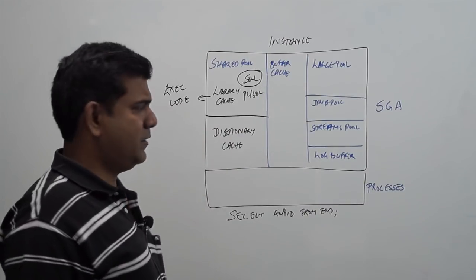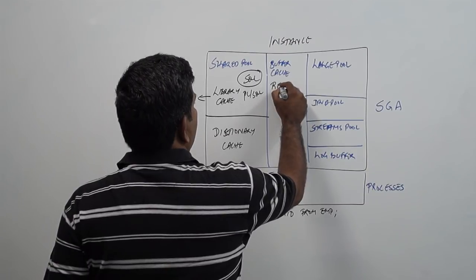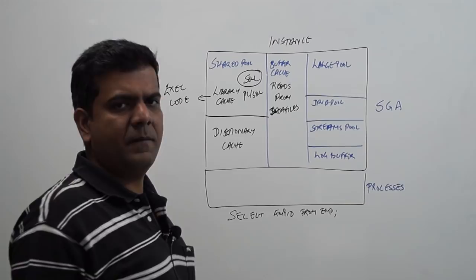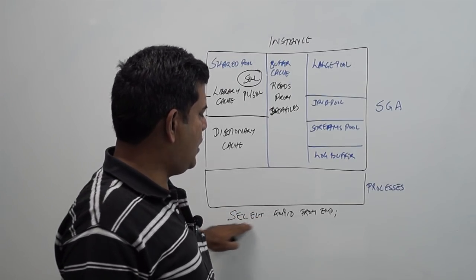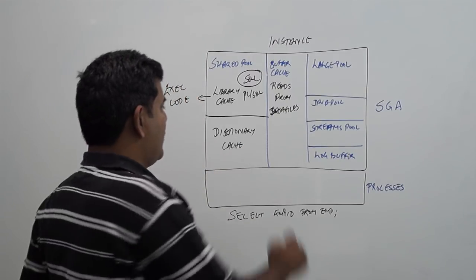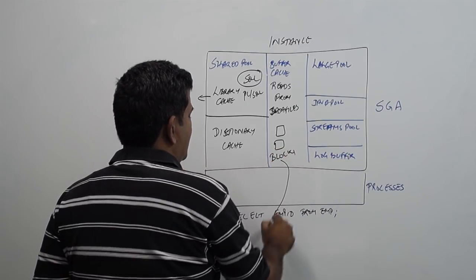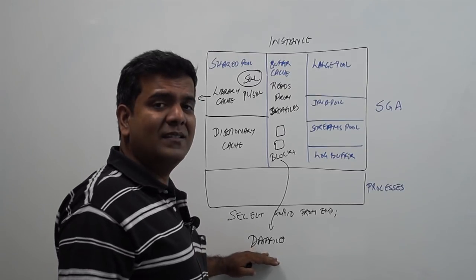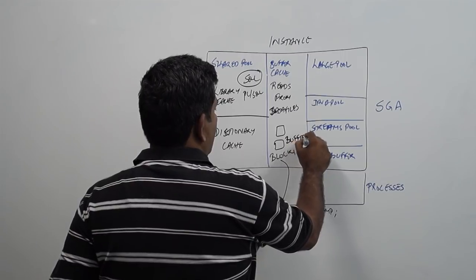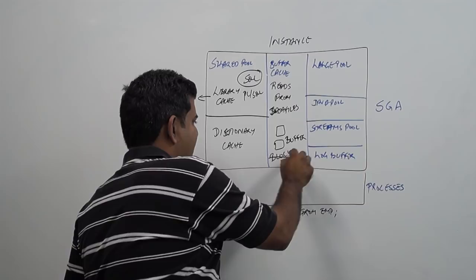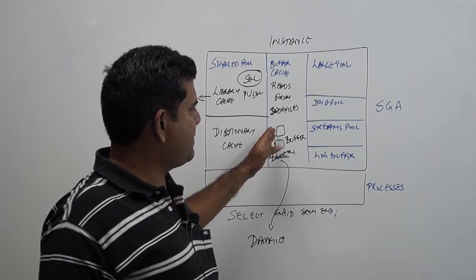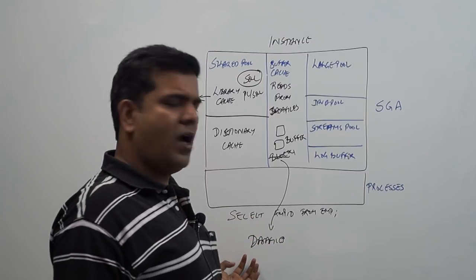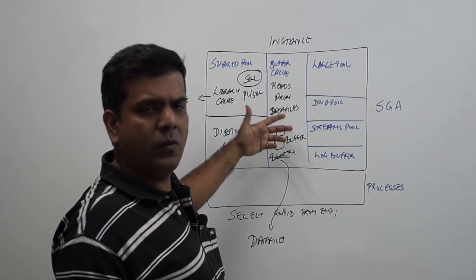Then comes buffer cache. Buffer cache reads from data files. So, whenever you make such a query, it has to fetch all the rows of EMP and give this in this case. So, it is going to read blocks from data files and bring them into the memory. The moment a block is read from a data file and brought into the memory, it is called as a buffer. So, it is a block when it is in a data file. When a copy of the block is read into the memory, it is called as the buffer cache. So, my query here select EMP ID from EMP, when it has to be processed, all the blocks related to EMP is brought into the buffer cache and the query is processed and turned out.